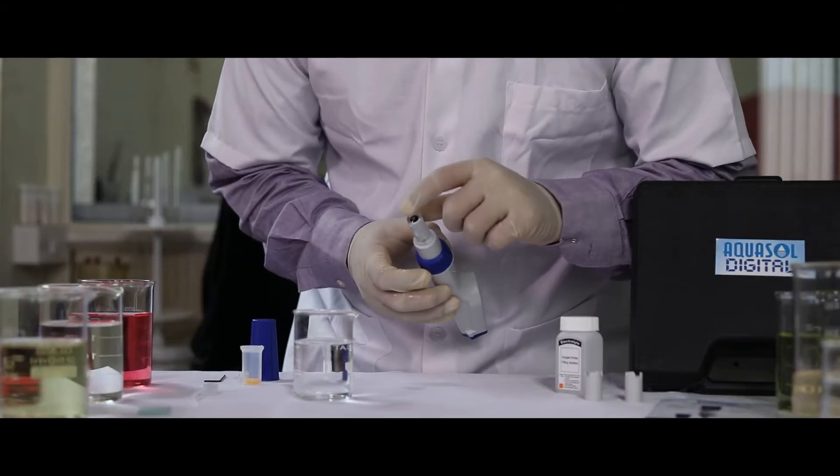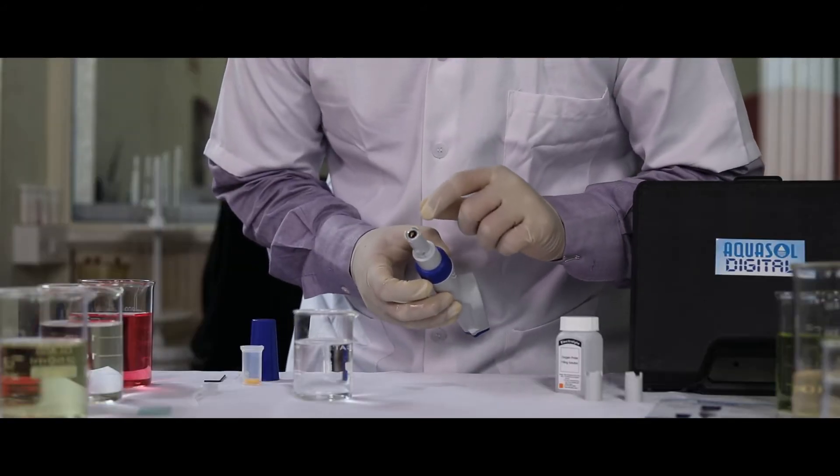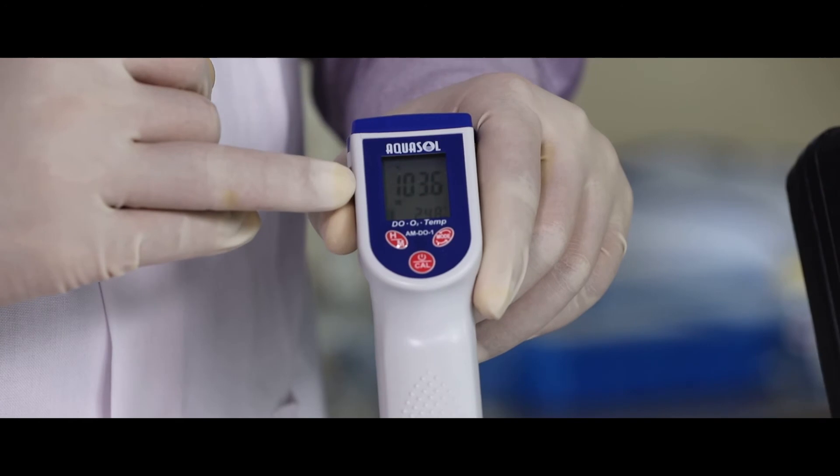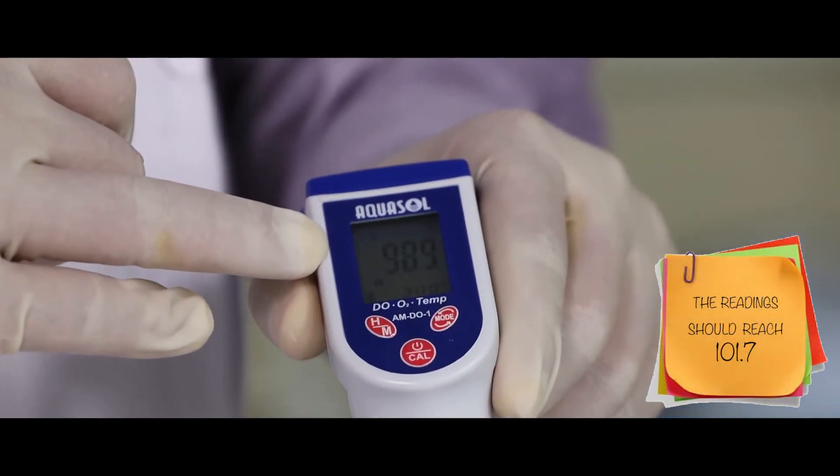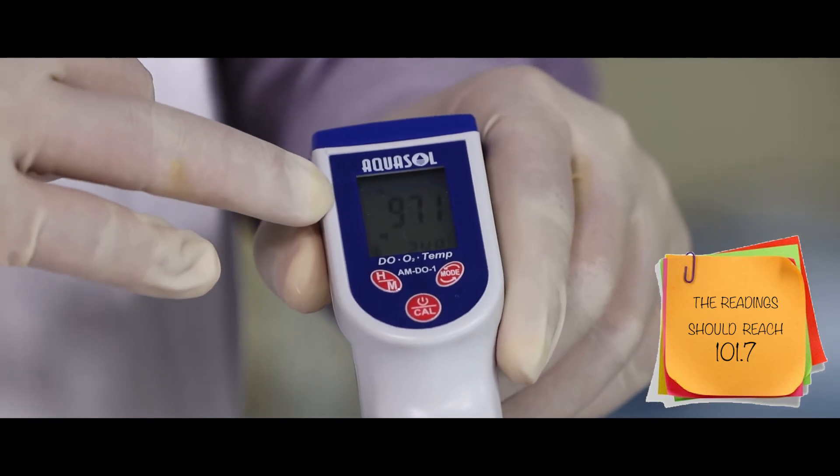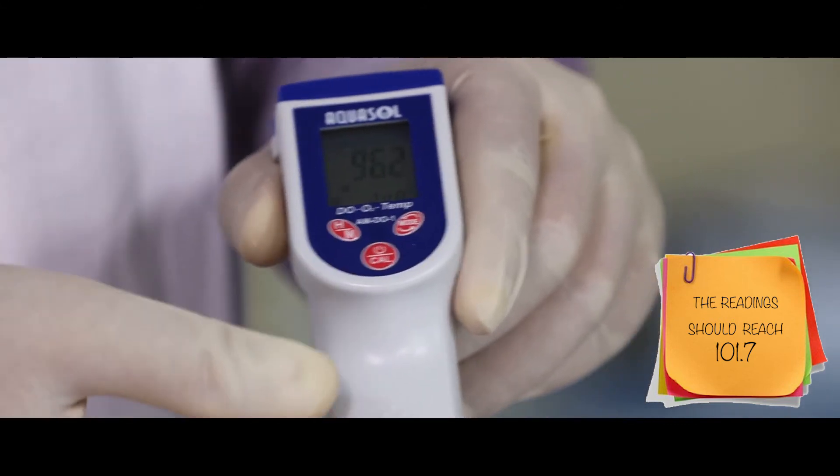Make sure no air bubbles form. Now turn on the meter. The meter will take about 20 to 30 minutes to polarize. The reading should reach 101.7.